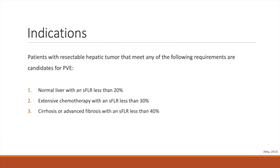The following are indications for patients with resectable hepatic tumors: a normal liver with an SFLR less than 20%, extensive chemotherapy with an SFLR less than 30%, and cirrhosis or advanced fibrosis with an SFLR less than 40%.